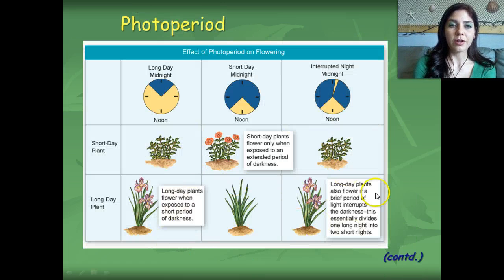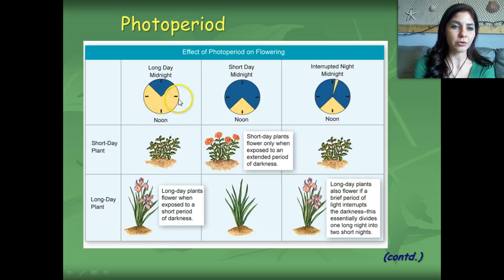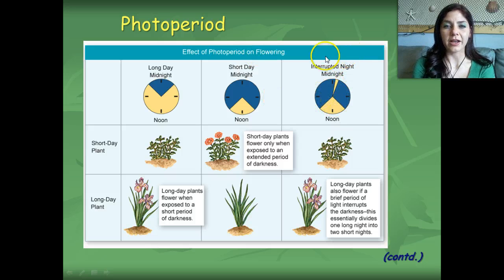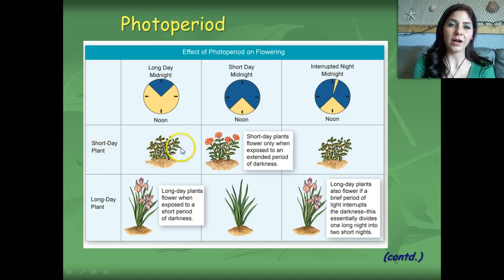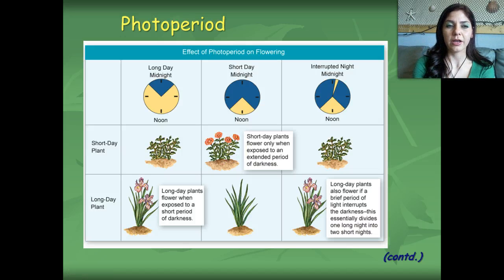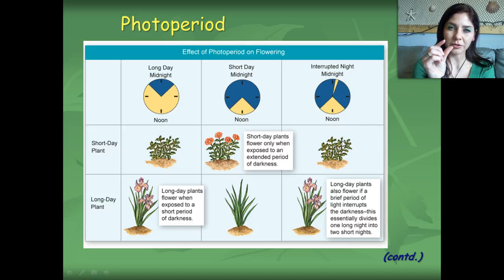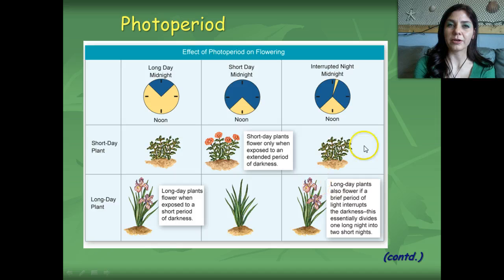Looking at this diagram, we have examples of different plants responding to photoperiods. We have a long day and short night, a very short day and very long night, and an interrupted night. Short-day plants will not flower when exposed to long amounts of light; they will only flower when exposed to very short amounts of light and a very long period of darkness. They will also not flower in an interrupted pattern of long dark, short light, long dark, and long light.